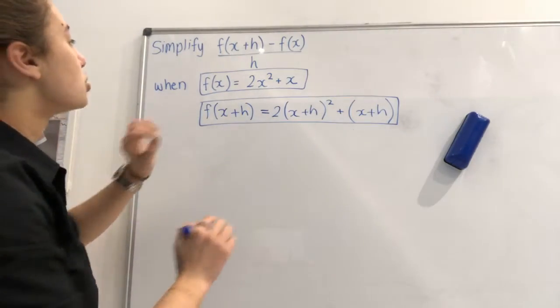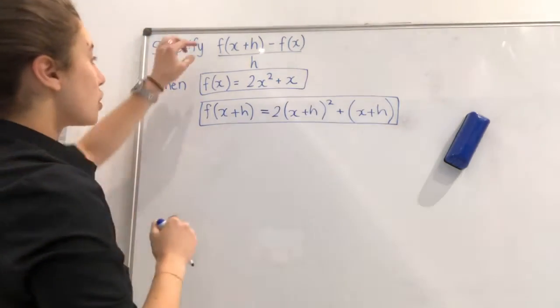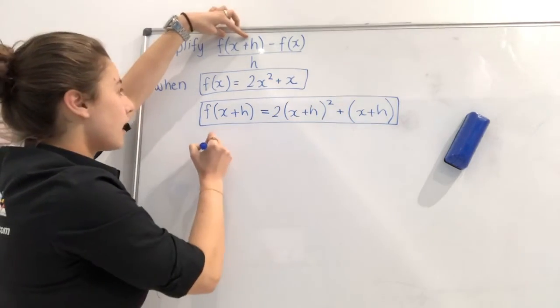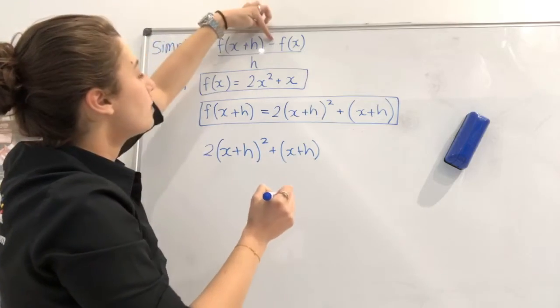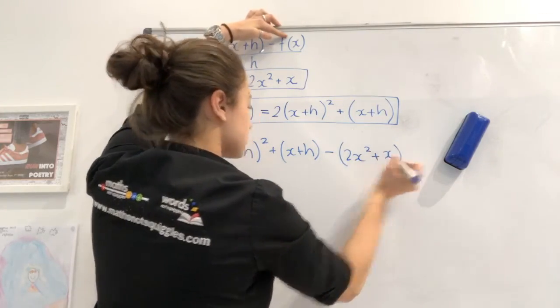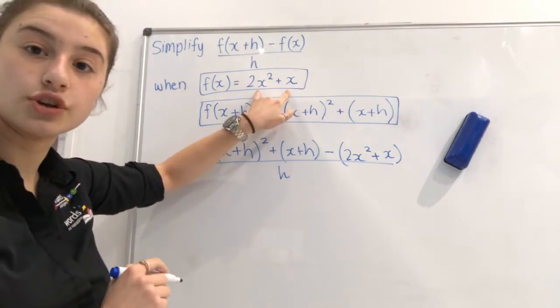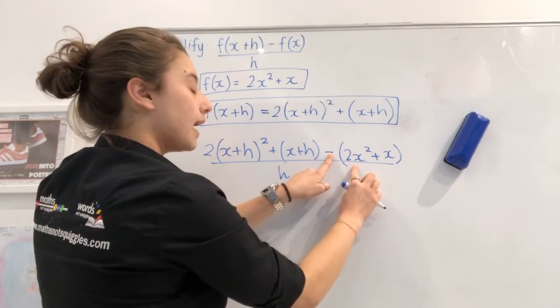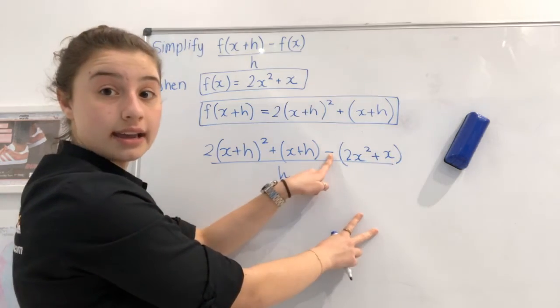The next step that we have is to replace these here with their corresponding components that they're equal to. So when we're simplifying this equation, we're going to replace f of x plus h with this really big thing here. So we're going to write 2 times x plus h squared plus x plus h, and then we're going to minus this bit. So minus 2x squared plus x, and we're going to write it all over h. Now, the reason that I included a bracket here is because when minusing, we have to remember to minus this whole component. And if we don't add brackets, we may be inclined to just write minus 2x squared and forget that we also need to minus that x.